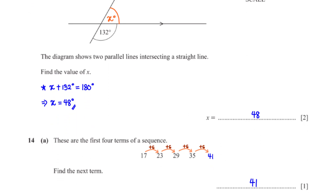These are the first 4 terms of a sequence. Find the next term. We see that the terms have a common difference of plus 6. So to get the next term, we add 6 to 35, giving us 41.